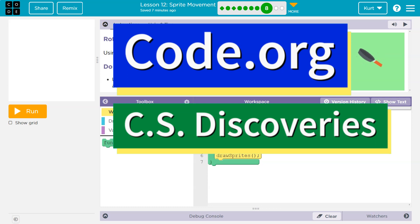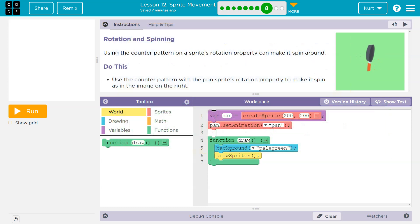This is code.org. Let's see what we're doing. Rotation and spinning. Using the counter pattern on a sprite's rotation property can make it spin around. Do this: use the counter pattern with the pan sprite's rotation property to make it spin as the image on the right.